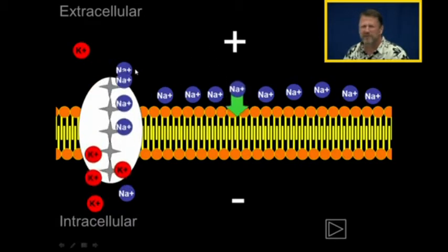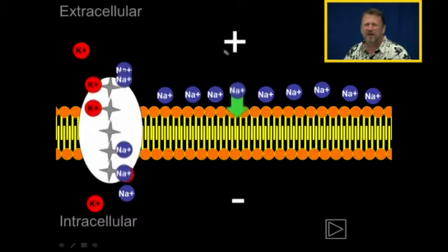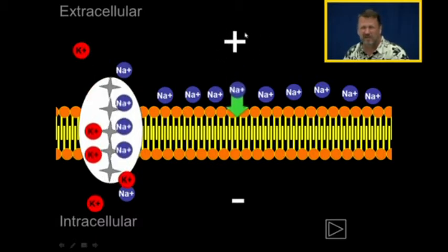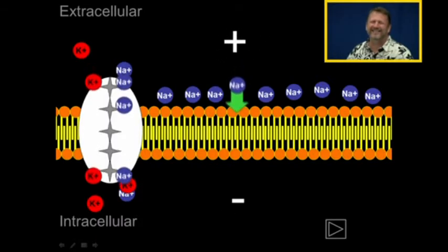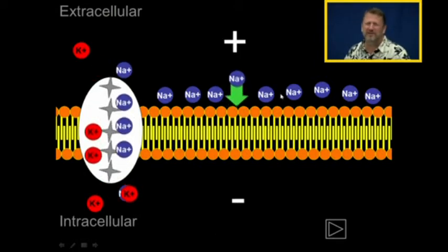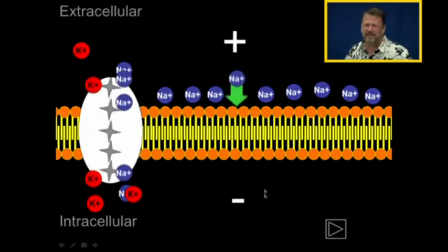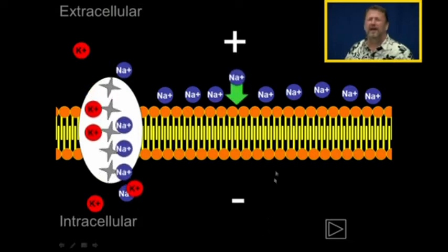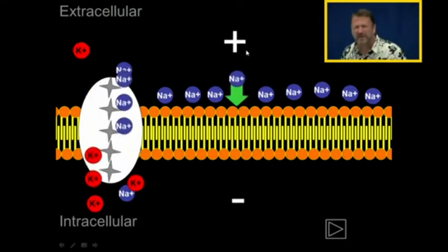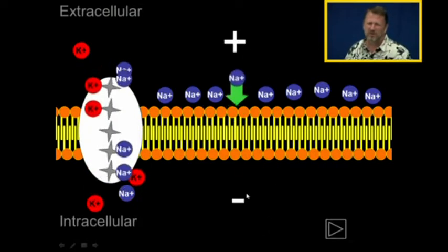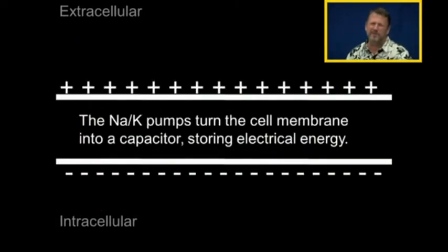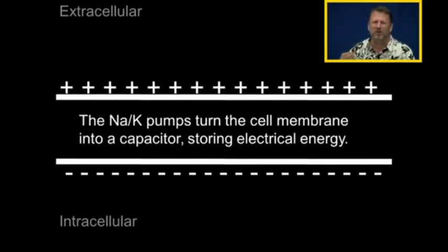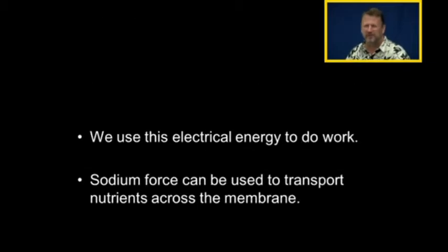By operating the sodium potassium pump, your cell can make the outside of the cell positively charged and the inside of the cell negatively charged. Because there's more sodium on the outside, it's trying to rush in, and because it's positively charged on the outside, sodium is trying to rush in. The sodium potassium pump turns the cell membrane into a capacitor, and so now we've taken that ATP and created electrical energy all across the membrane to do work.